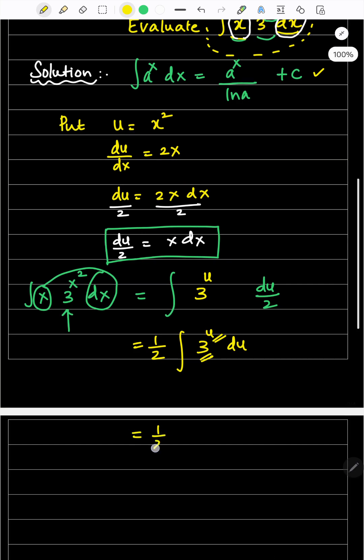This equals 1/2 bracket open. What is the formula? 3 to the power u divided by ln 3 plus integrating constant c.